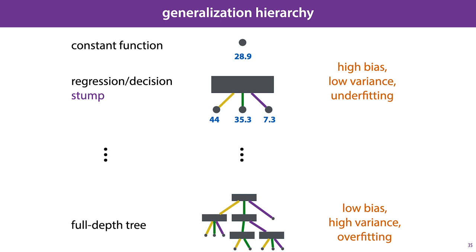Tree models are a classic example of a model class that provides a generalization hierarchy. At one end of the hierarchy, the model class provides both very simple and low-capacity models, like constant models which output just one value over all instances—that is, a tree without any splits—or stumps, trees that make just one split. These are low-capacity models with high bias and low variance, also known as underfitting models.